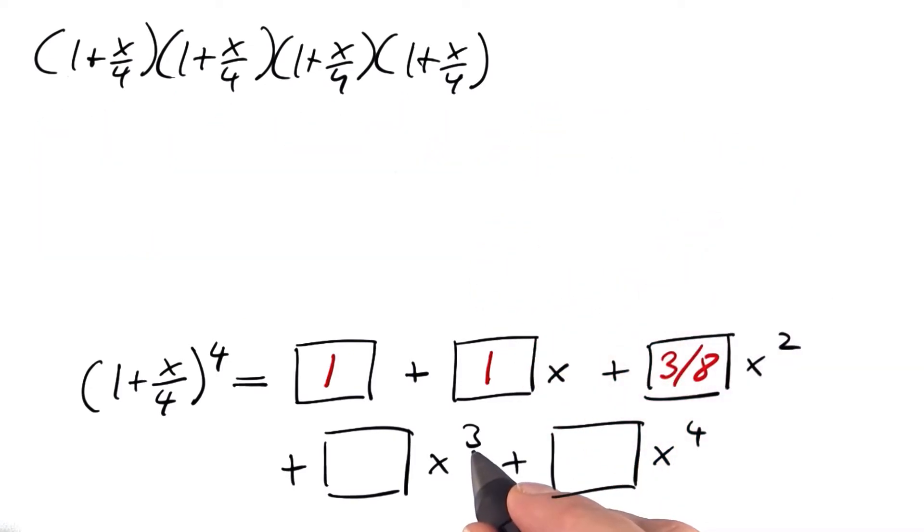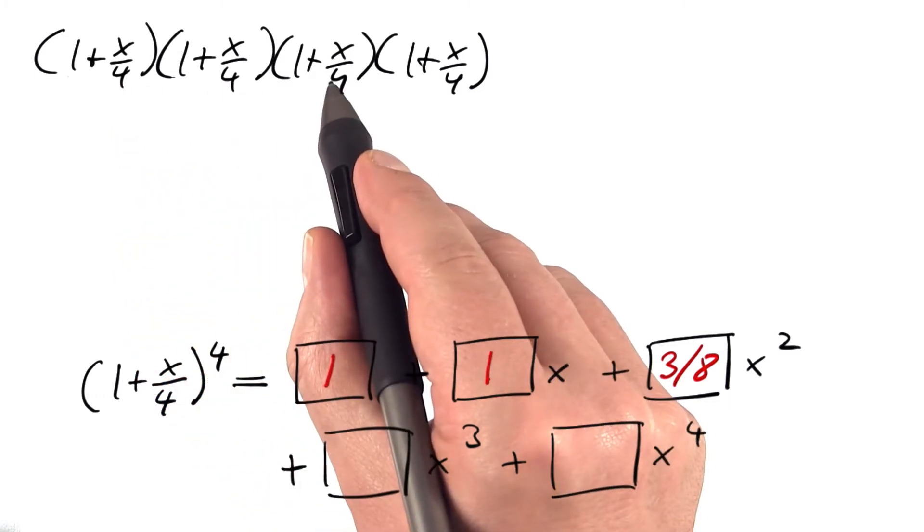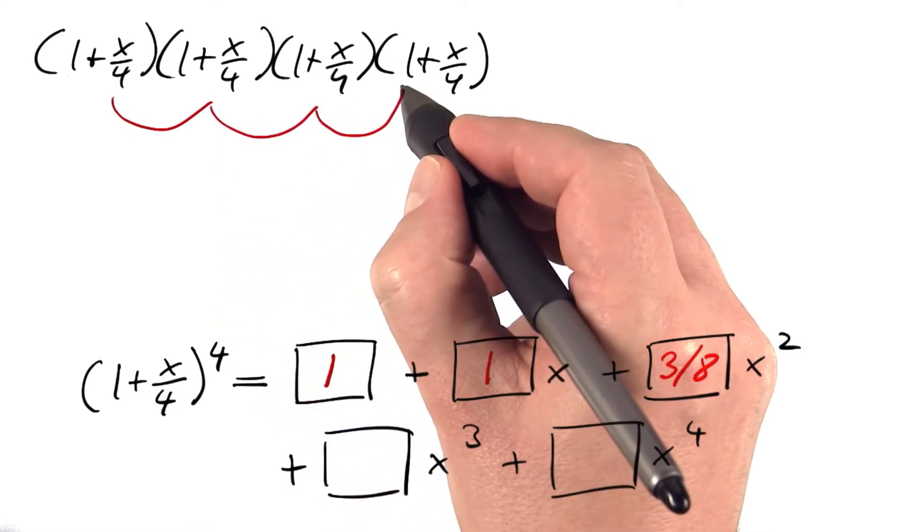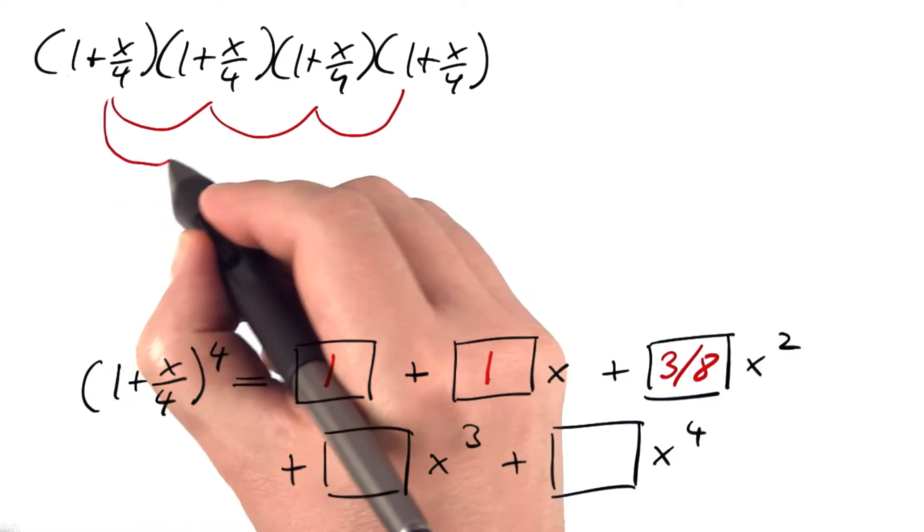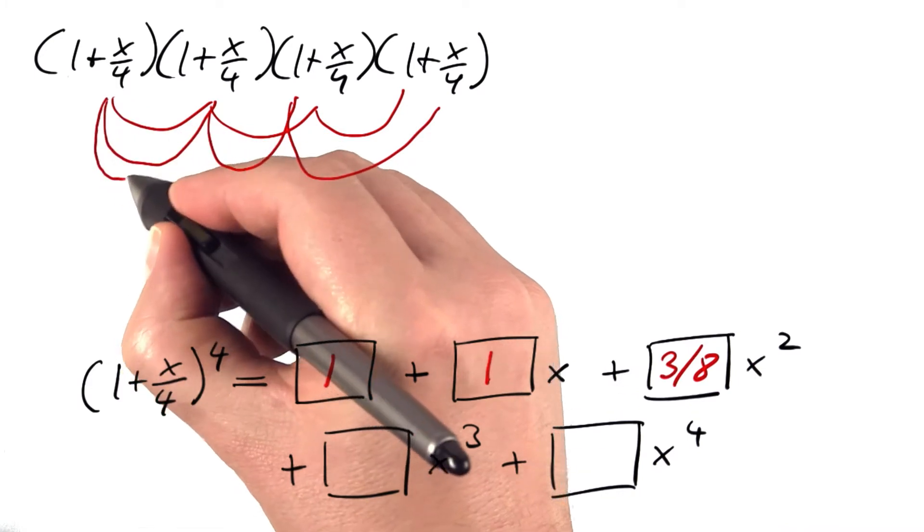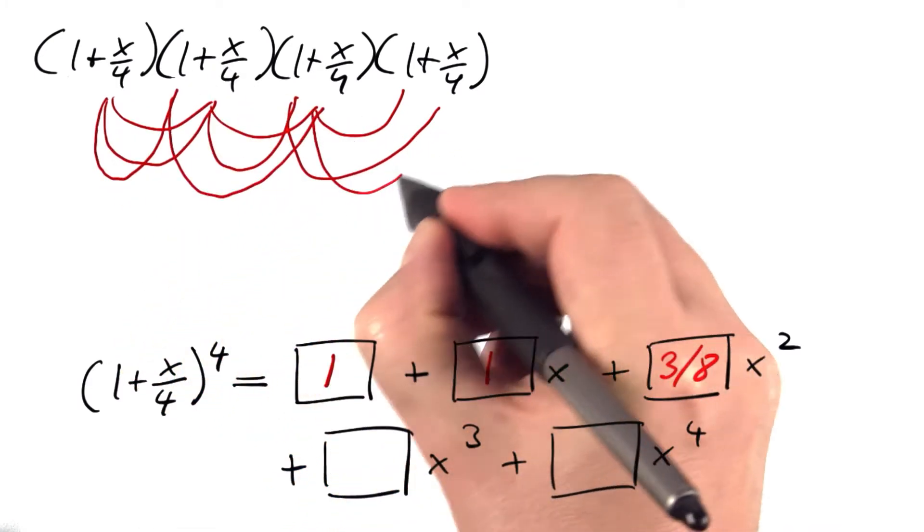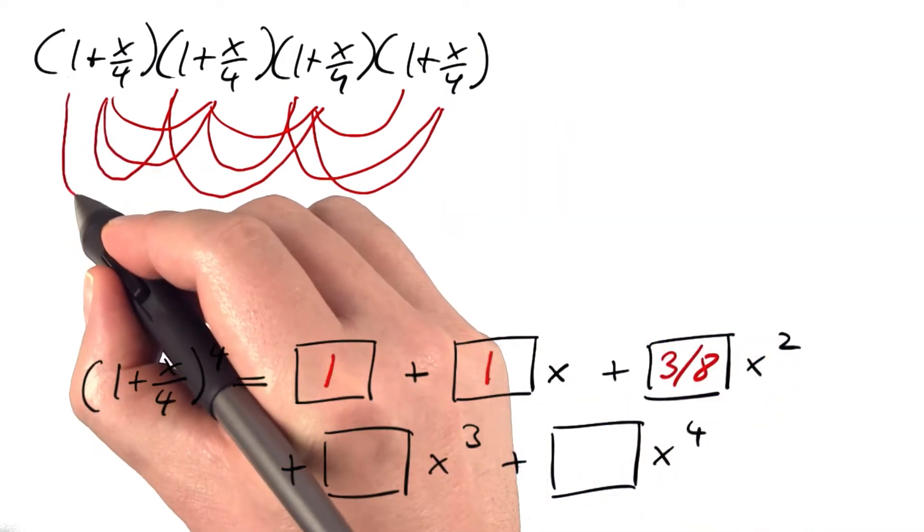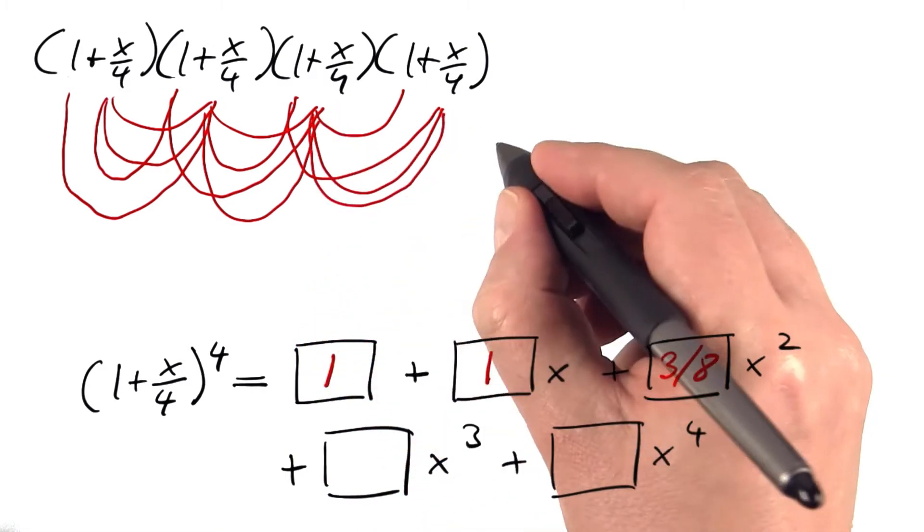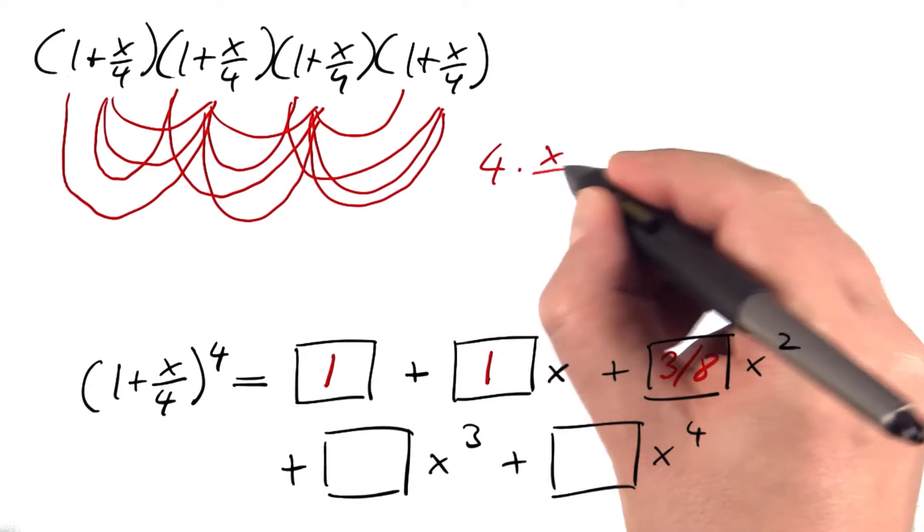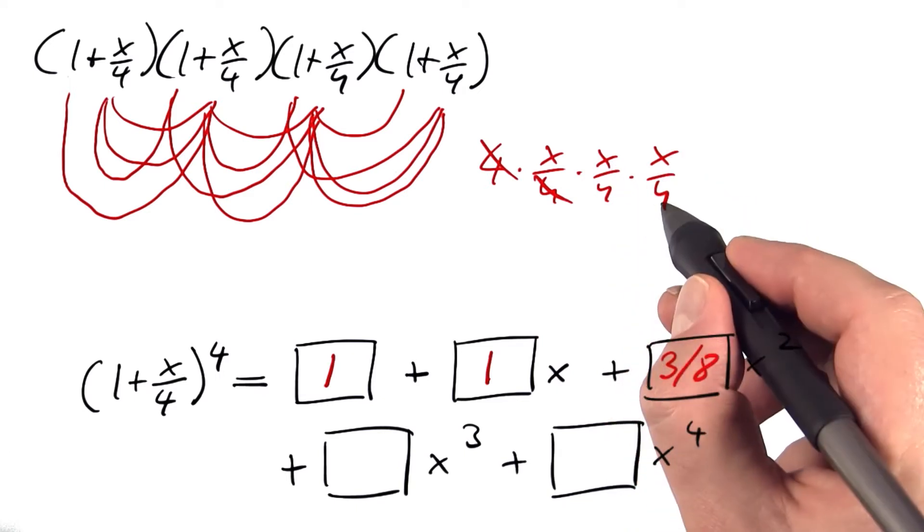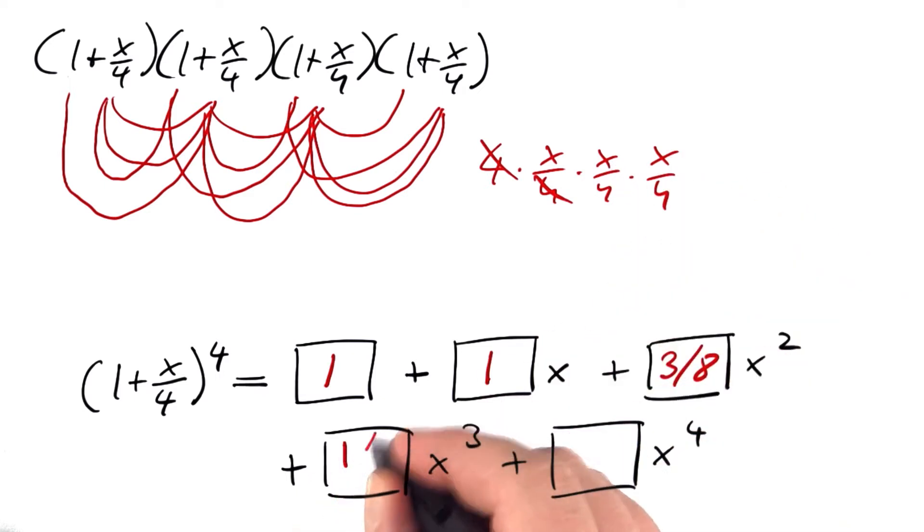To get x to the third power, we need to pick x from three parentheses and 1 from the other. We can pick x from the first three parentheses and 1 from the last, or x from parentheses 1, 2, and 4 with 1 from the third, or x from 1, 3, and 4 with 1 from the second, or 1 from the first with x from the last three. Four ways of doing this: 4 times (x/4)³, which leaves us with x³/16, or 1/16.